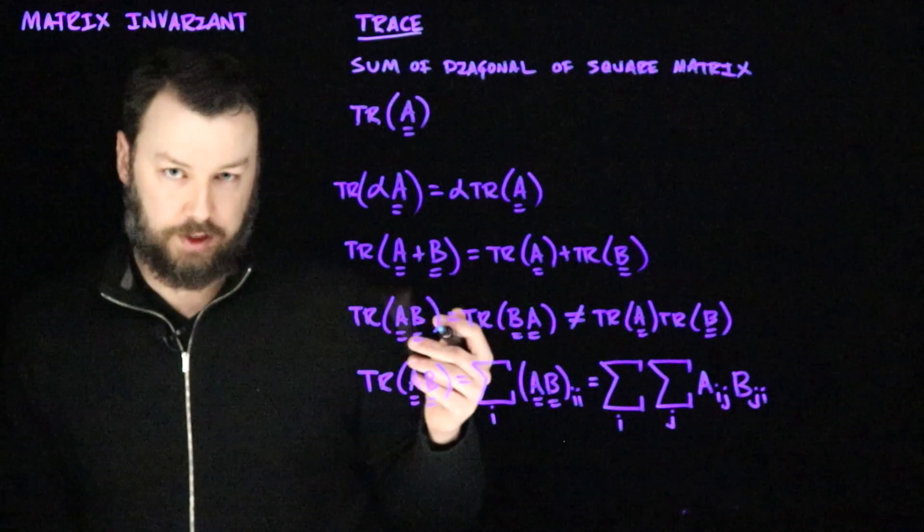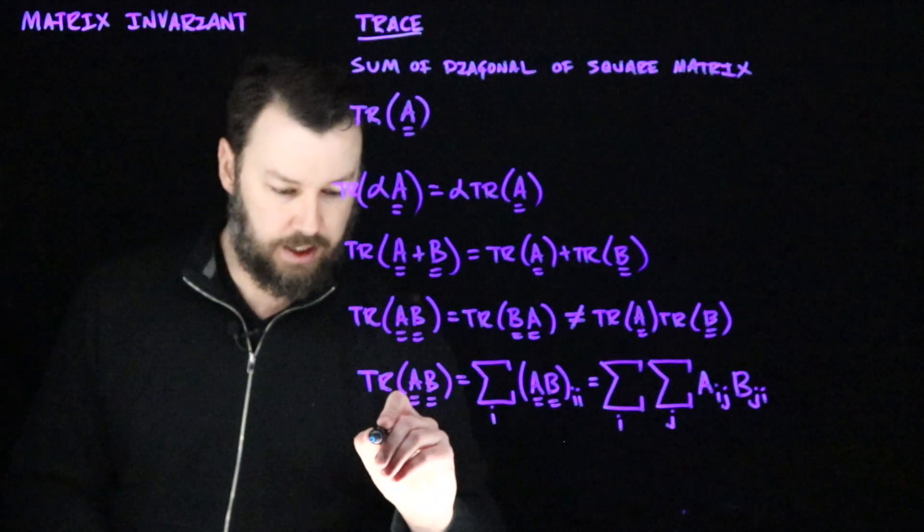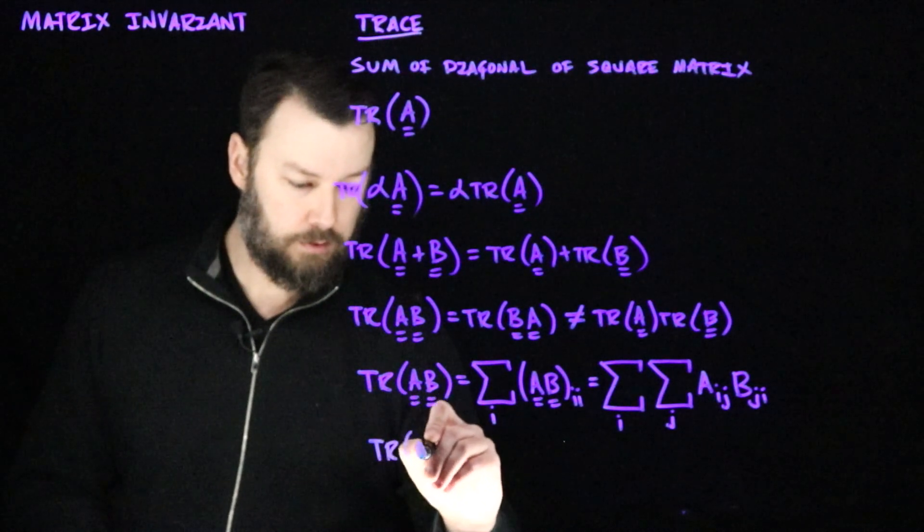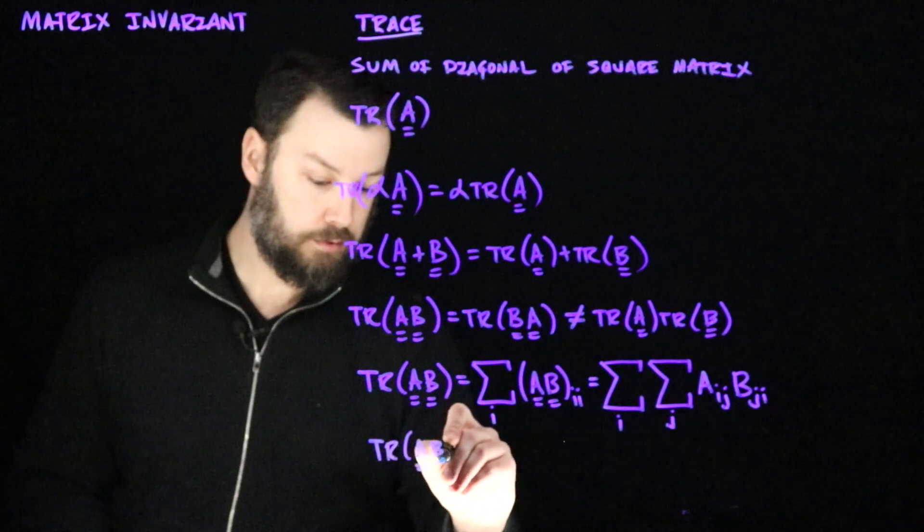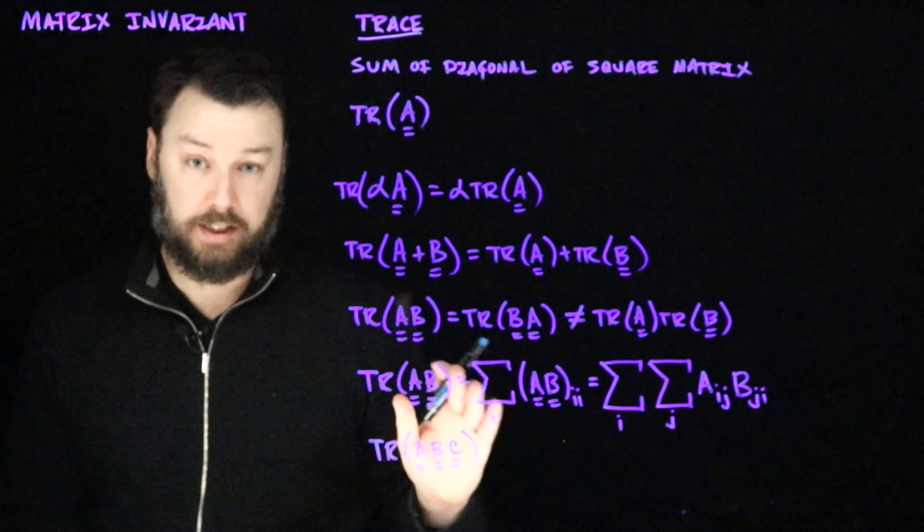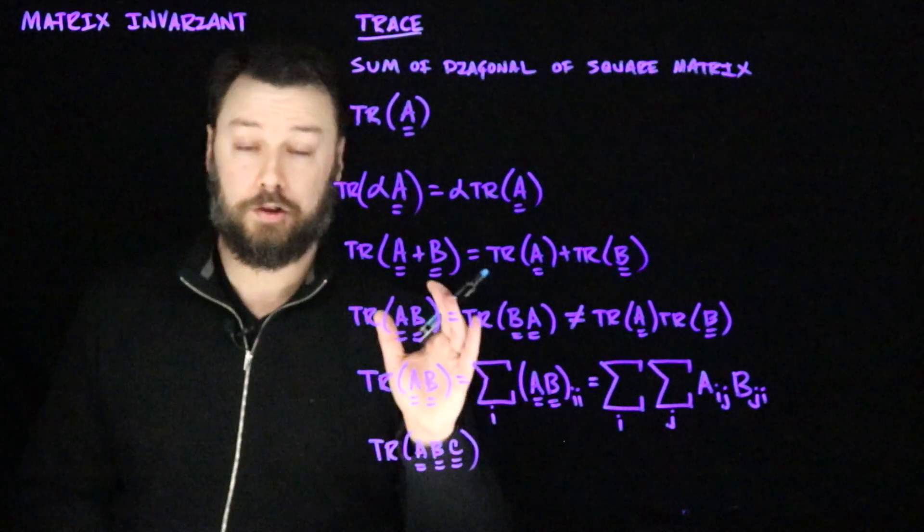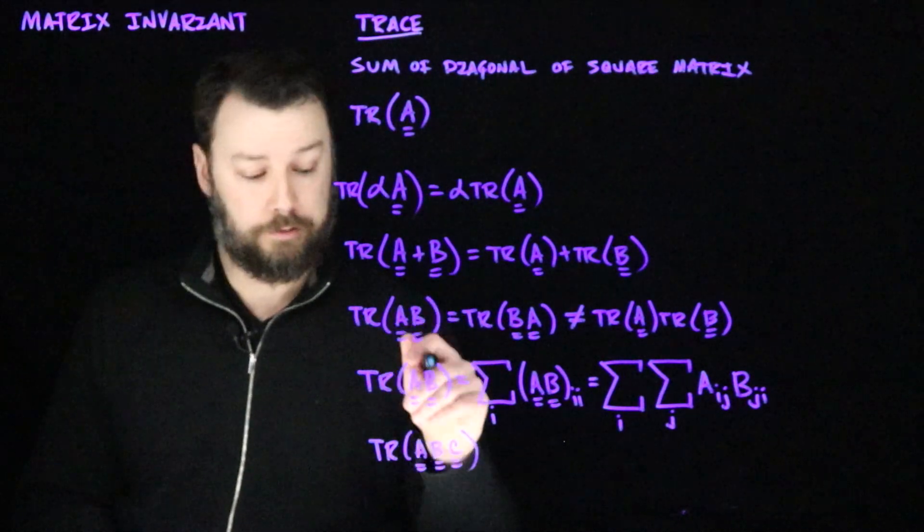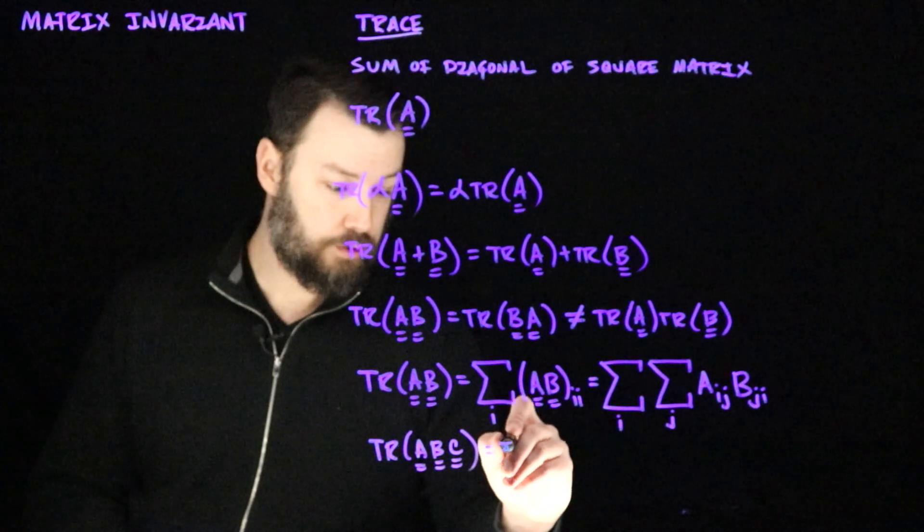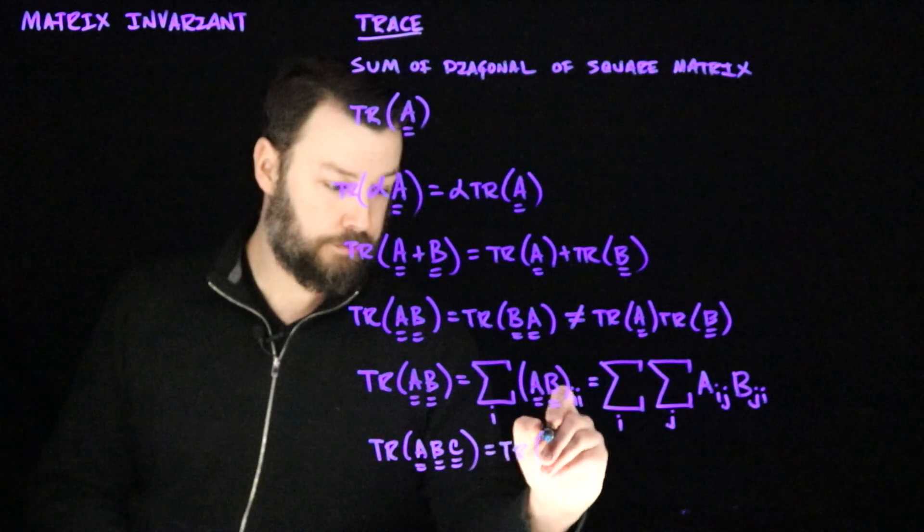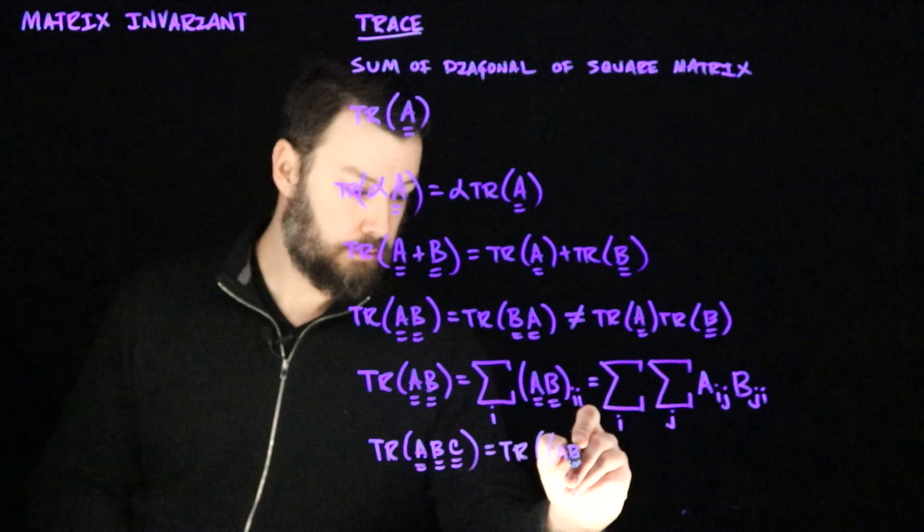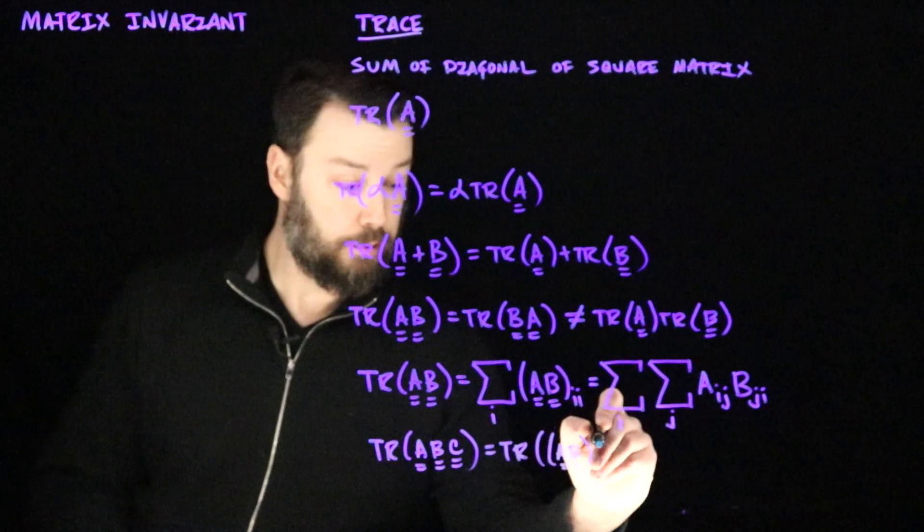Let's think about the implications of that then. So let's imagine that I had trace ABC, and that these again are all dimensionally compatible. Then I could use the associativity of matrix multiplication to swap this around. So I could say, let's treat this as trace of A, B multiplied by C.